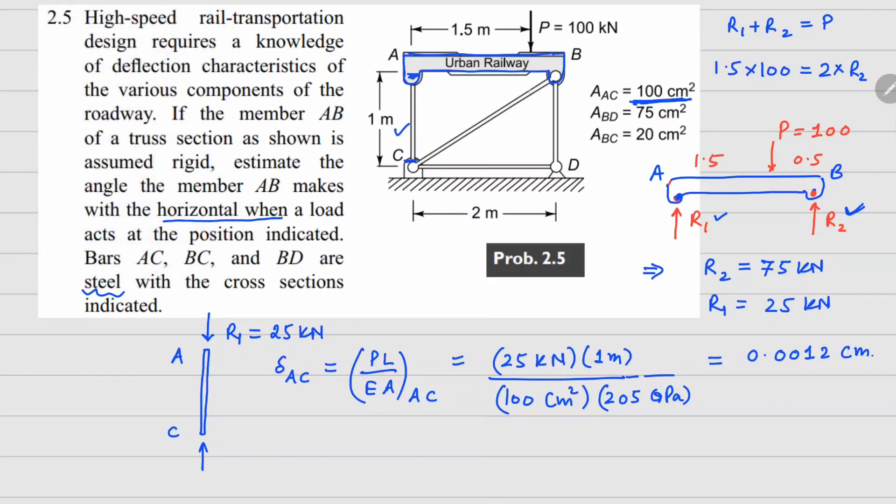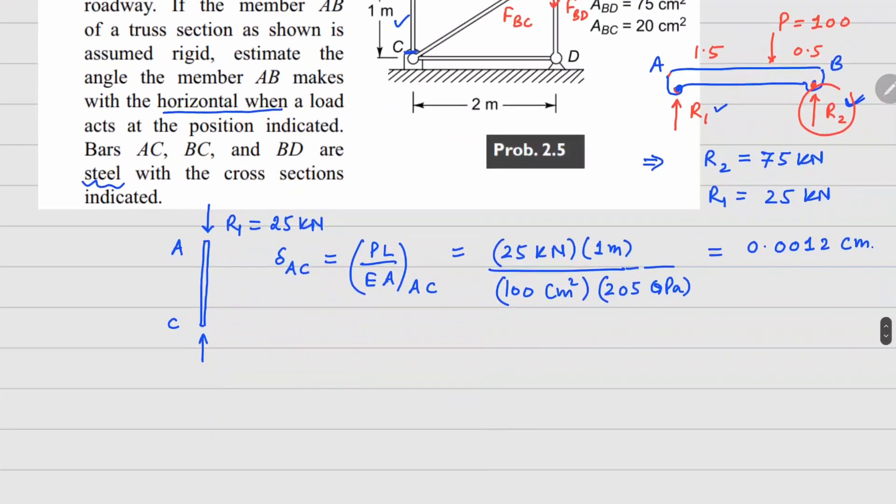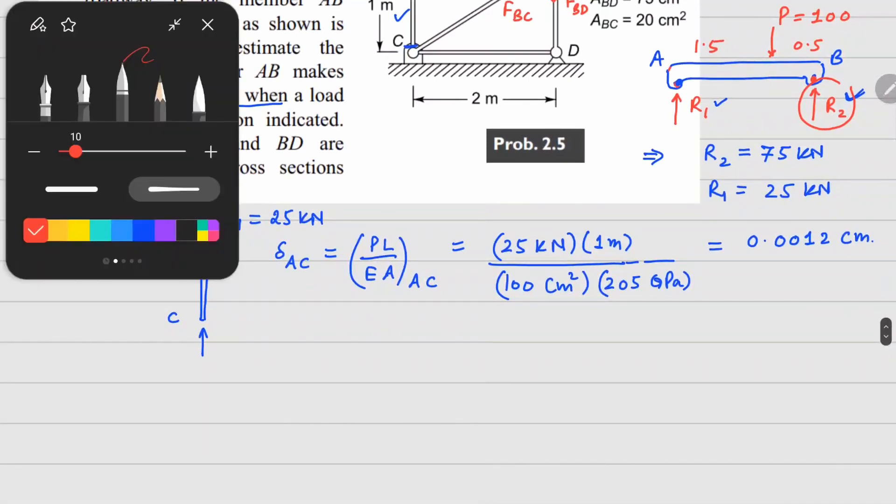Now if you want to look at what is happening at point B, there are these two members there. We have this FBC maybe coming here, FBD there, and this force R2 which was upwards on this AB member, so it's going to be downward on this joint. So I can separate this joint here.